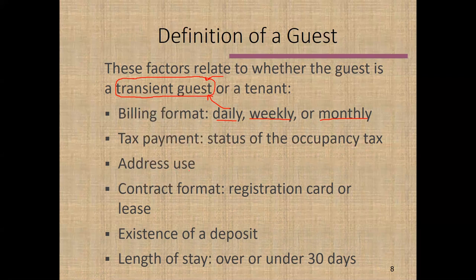Address use: is this person receiving mail at your facility? Is this person using it as an address for correspondence or packages? That would indicate they are a tenant. If they aren't receiving any mail, they're more likely a transient guest. Everyone needs mail, and if they're not getting it here, they must have another home — which points to them being a transient guest.